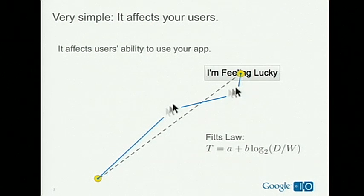Your hand's not very intelligent on its own, so at some point you realize there's some error and you correct for that. You change your direction a little bit, then you correct again. You do this in a series of smaller and smaller sub-movements until you finally get to your target. In fact, the series of smaller and smaller sub-movements is where that whole log term comes from in Fitts' Law.